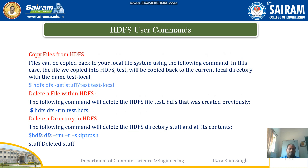To copy a file from HDFS back to your local file system, use: `hdfs dfs -get stuff test_local`. To delete a file present in HDFS, use the command: `hdfs dfs -rm test.hdfs`. Using this command, the test.hdfs file can be removed from the HDFS. To delete a directory in HDFS, similarly use: `hdfs dfs -rm` with the directory name.